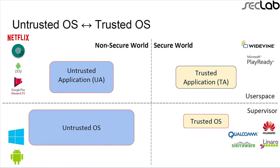This diagram shows the untrusted OS and trusted OS in play. The left side indicates the non-secure world; the right side indicates the secure world. A horizontal line differentiates user mode and kernel mode. Untrusted applications are like regular Android apps — Netflix, Google Play, Pay, or your fingerprint scanner — and the untrusted OS could be Android or Windows Phone. The trusted OS, which you generally don't interact with, could be Qualcomm's QSEE, Huawei's Trusted Core, Sierra TEE, or Linaro's OP-TEE. Trusted applications include Widevine or PlayReady.